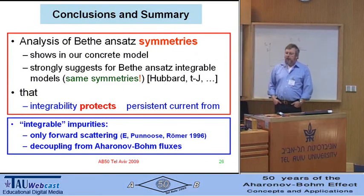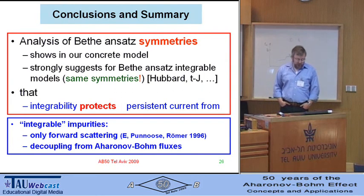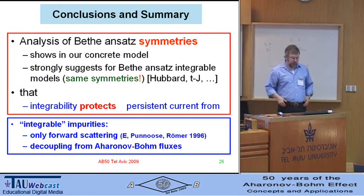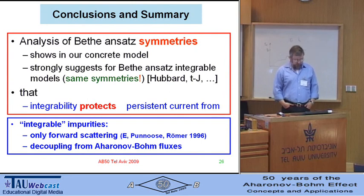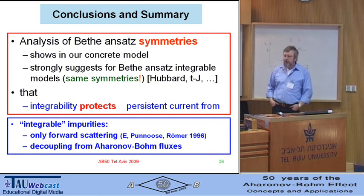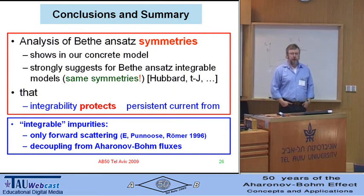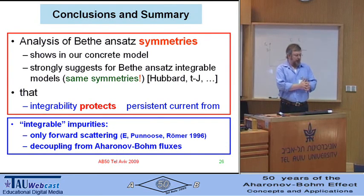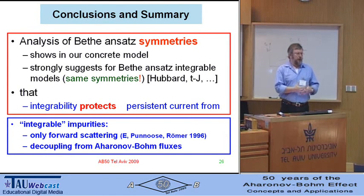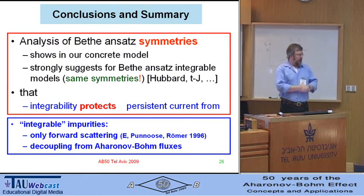We conclude that the Bethe Ansatz shows, in our concrete model — and we conjecture also in other models amenable to Bethe Ansatz methods — that integrability actually protects the persistent current from integrable impurities. This kind of protection is not unusual; it has been observed in other systems with impurities that have a Bethe Ansatz solution.